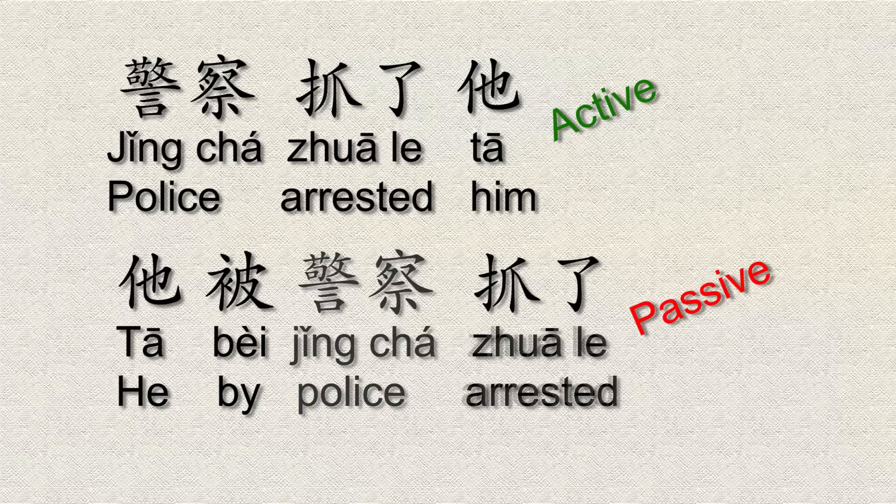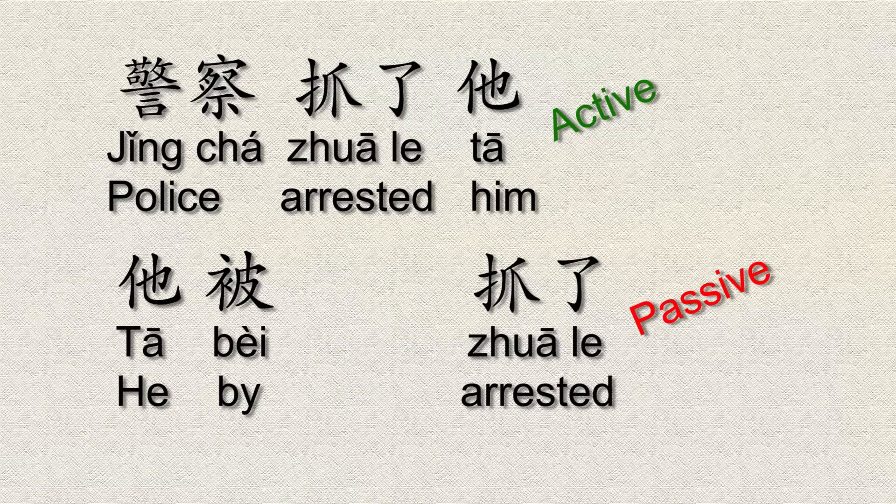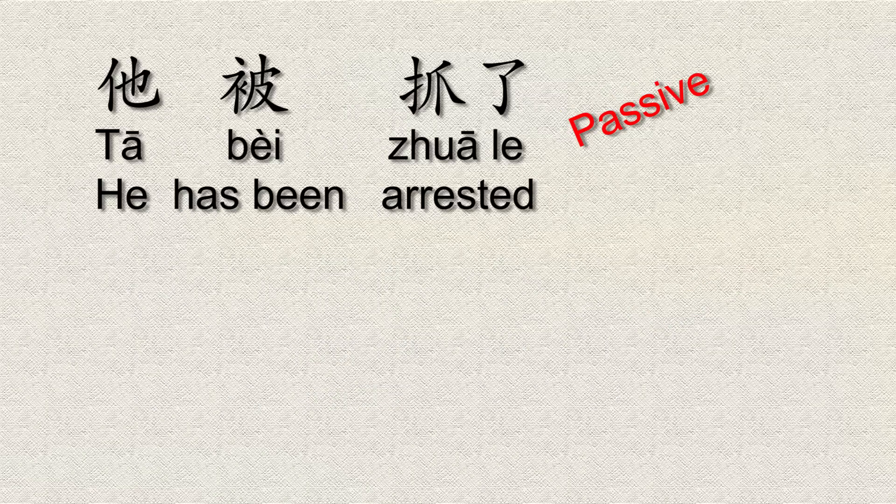Another feature of using 被 is that you can take out the police altogether — take out the people he was arrested by — and just say 'tā bèi zhuā le.' That's something you could only do by using the 被 character. In the active form, 'the police arrested him,' you can't remove 'police' — you need the subject there doing something to the object. But with 被, you can leave it out.